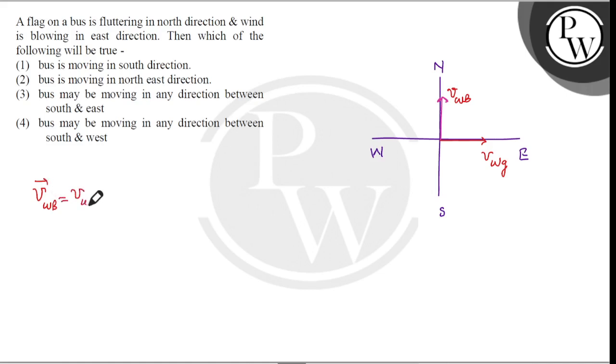Velocity of wind with respect to ground minus velocity of bus with respect to ground, so we will add negative of velocity of bus. Clearly, negative of velocity of bus must be in this direction somewhere.